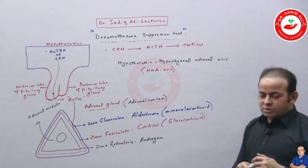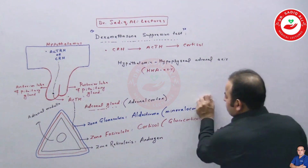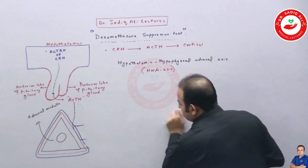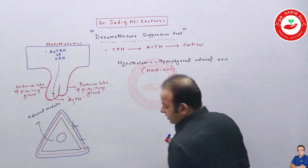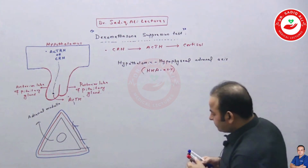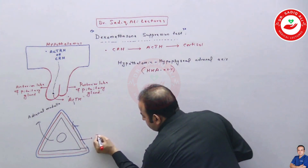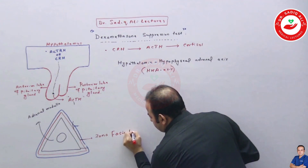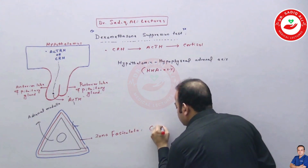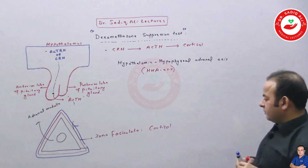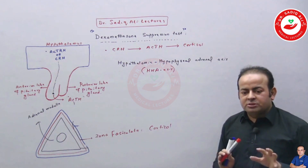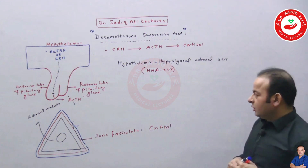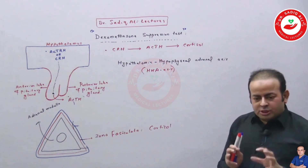Now let's come to the main topic. The zona fasciculata releases cortisol. A condition characterized by increased cortisol levels in the body is called Cushing syndrome. To check whether Cushing syndrome is present or not, we use the dexamethasone suppression test.